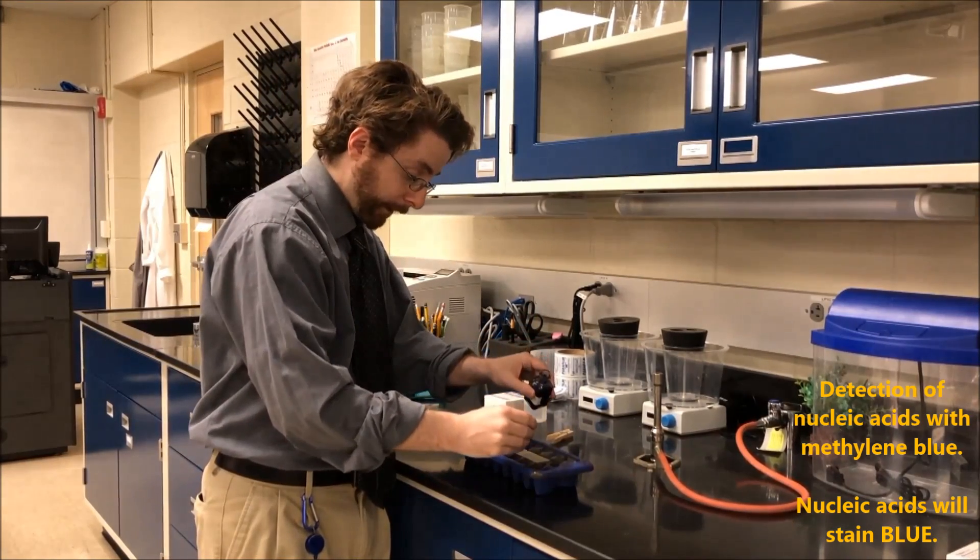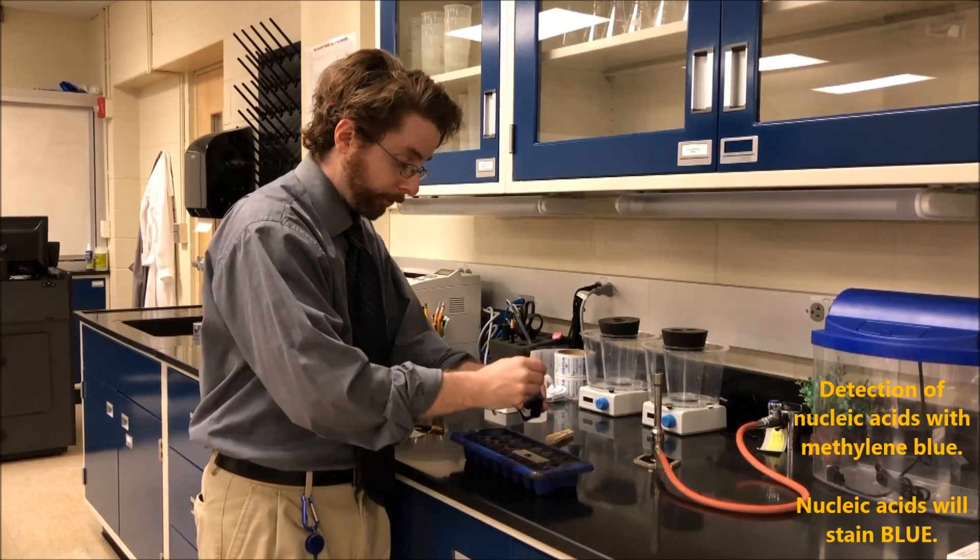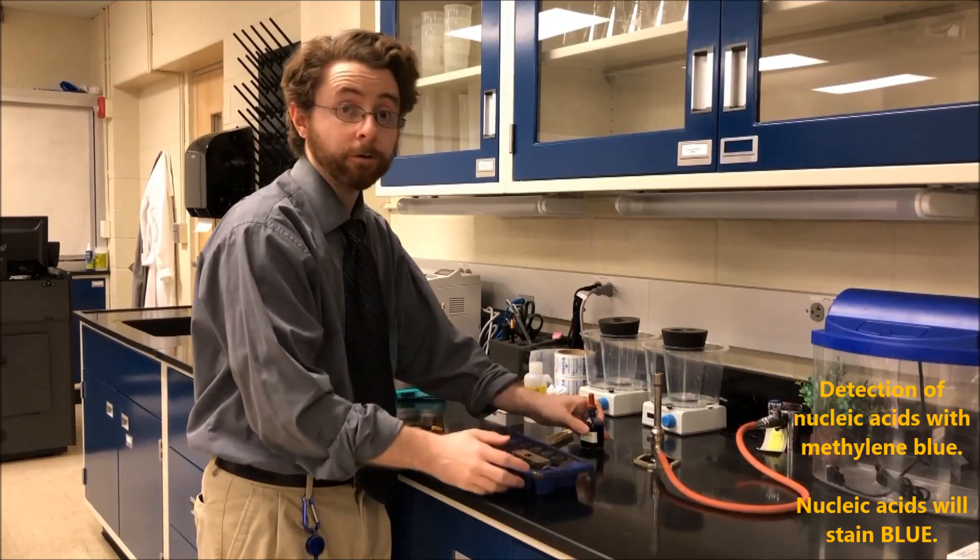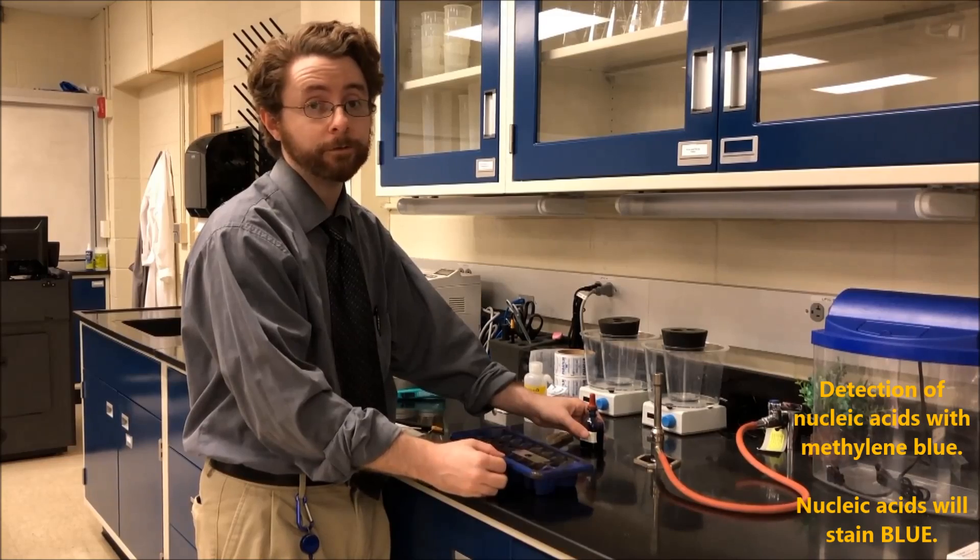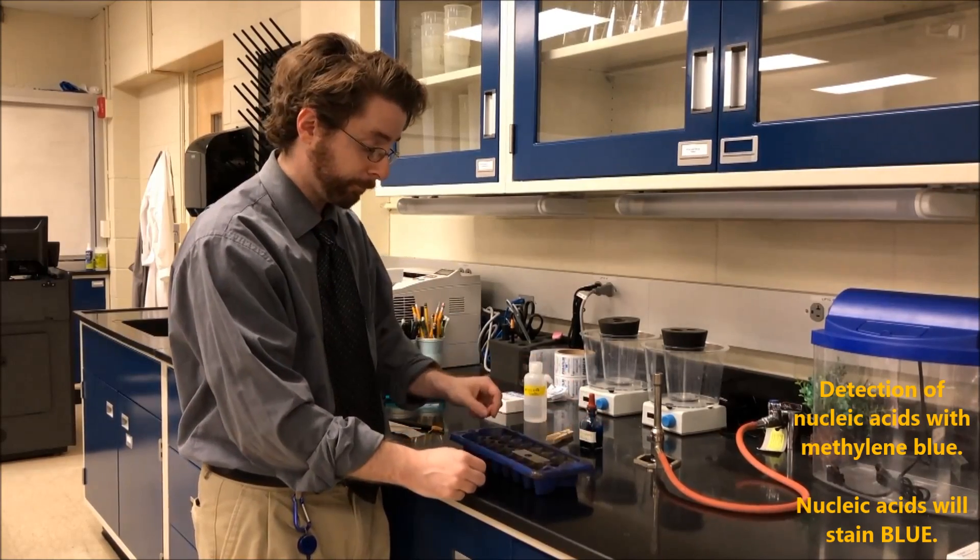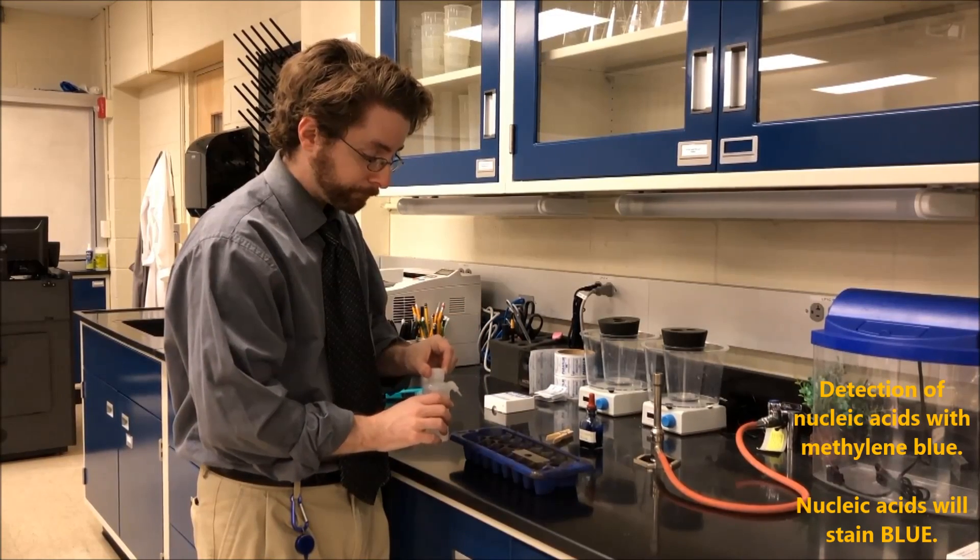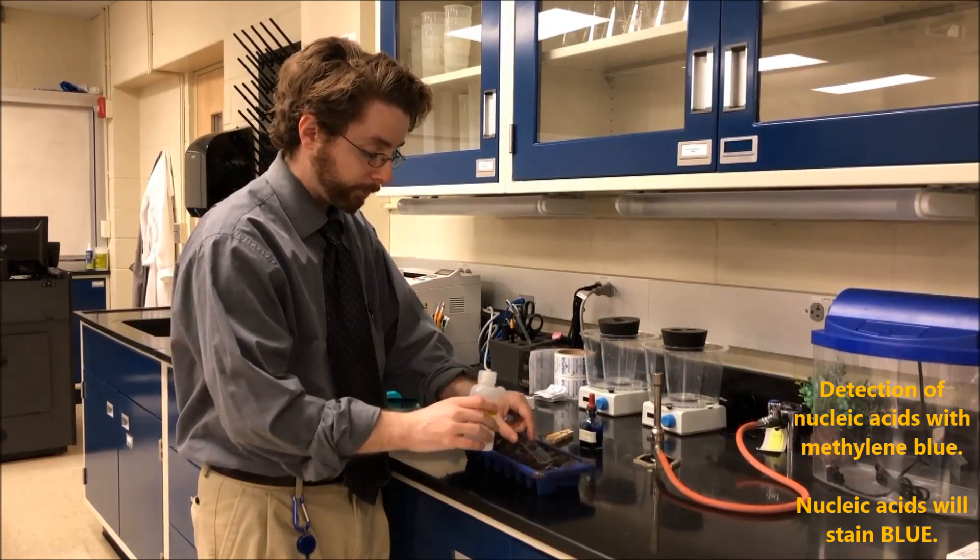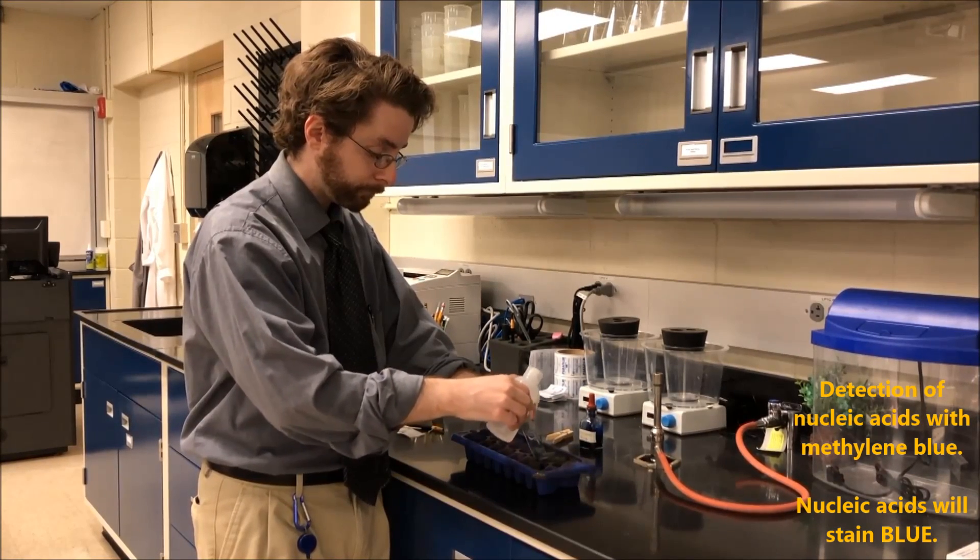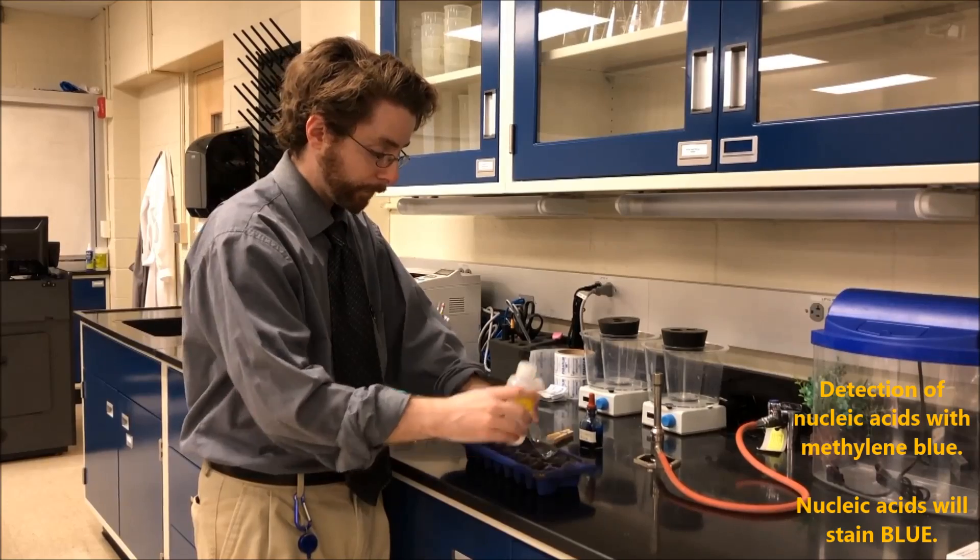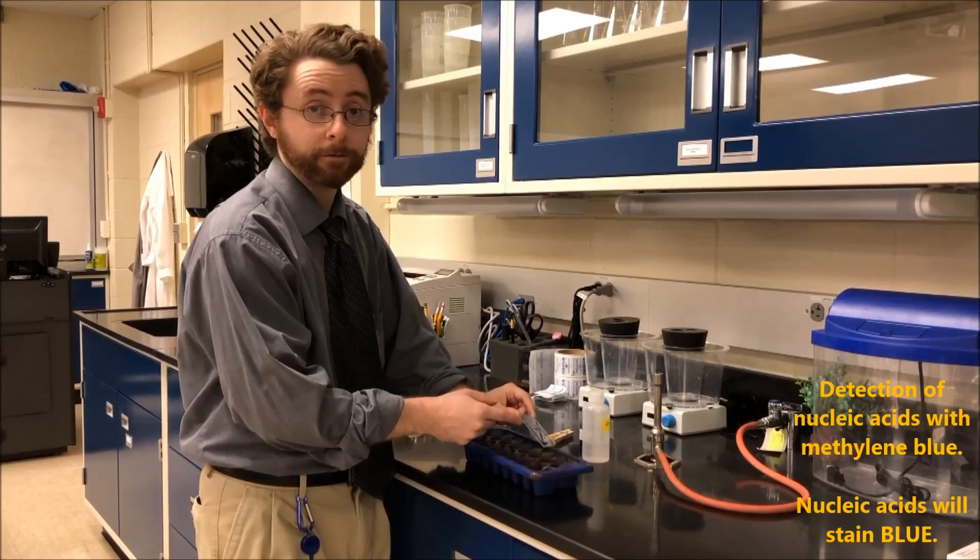So methylene blue, again, stains for nucleic acids like DNA. So when I look at my cheek cells, the nucleus of my cell should be stained blue because DNA is found in the nucleus of eukaryotic cells. We let the stain sit for a moment, and then we rinse with some deionized water. Tap off the excess. And then we can look at the cells using the microscope.